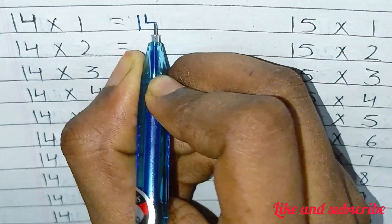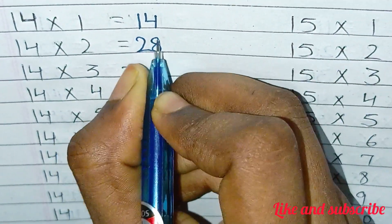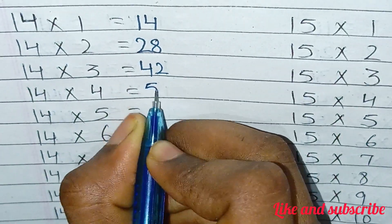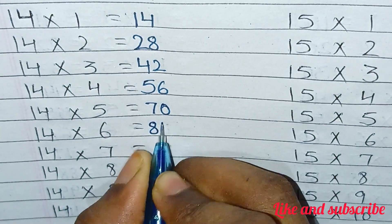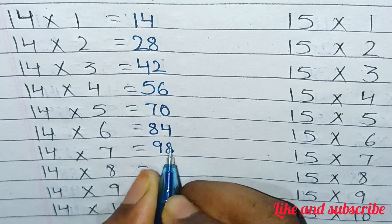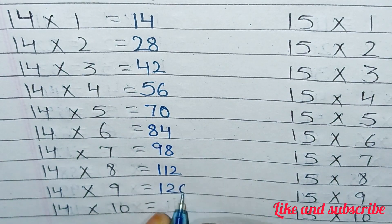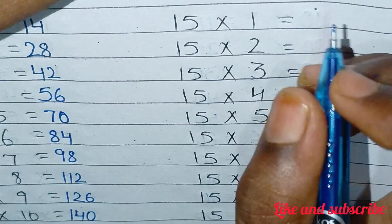14×1=14, 14×2=28, 14×3=42, 14×4=56, 14×5=70, 14×6=84, 14×7=98, 14×8=112, 14×9=126, 14×10=140.